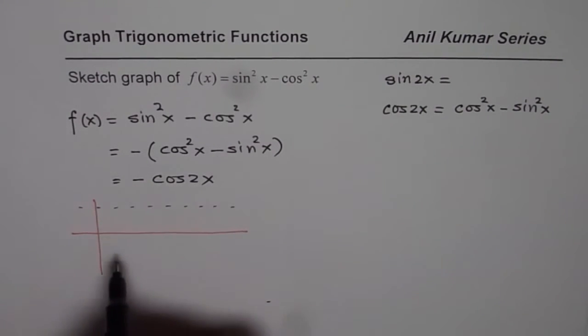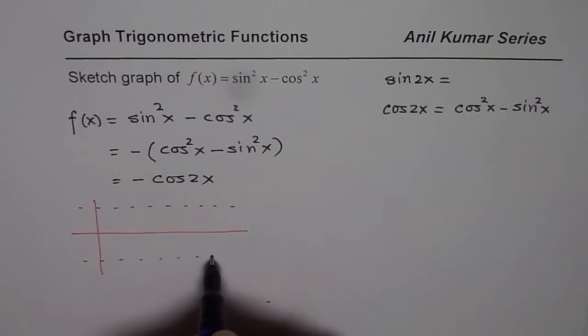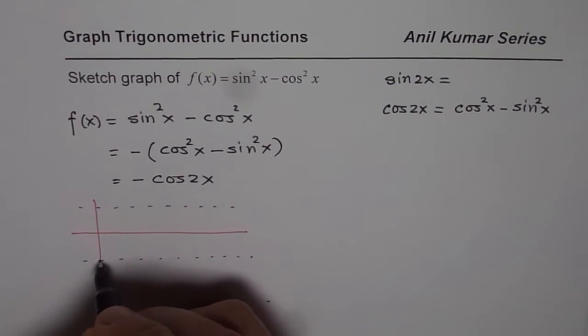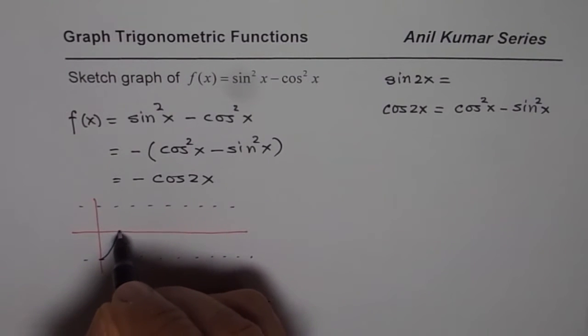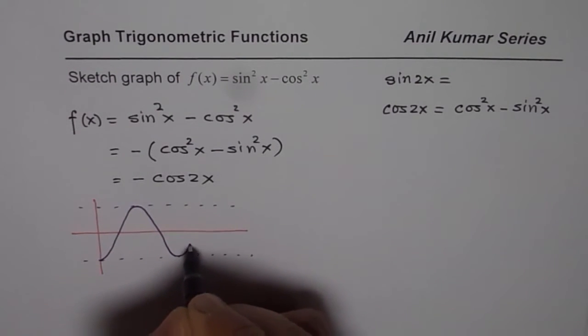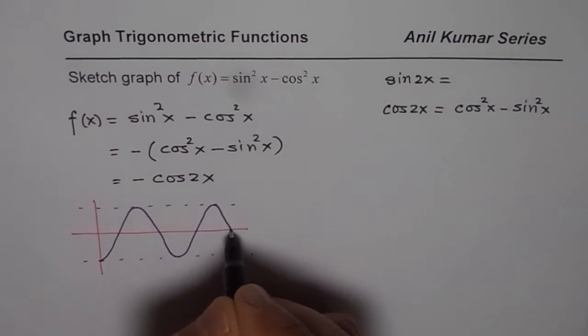So let me sketch approximately. Well, let's say this is 1 for us and this is -1 for us. Then I could sketch this graph kind of like this: one wave, two waves.